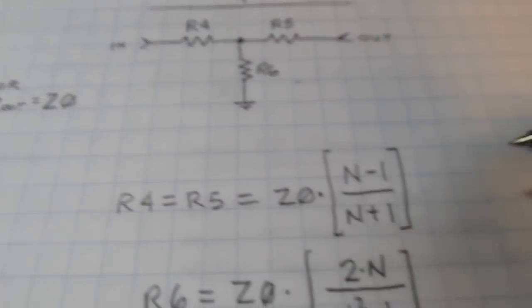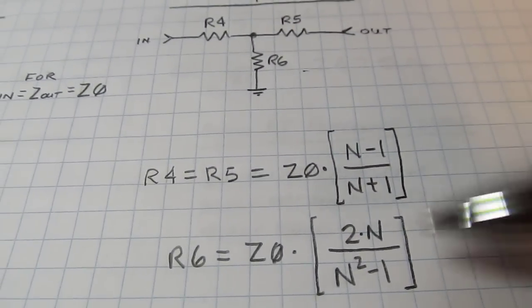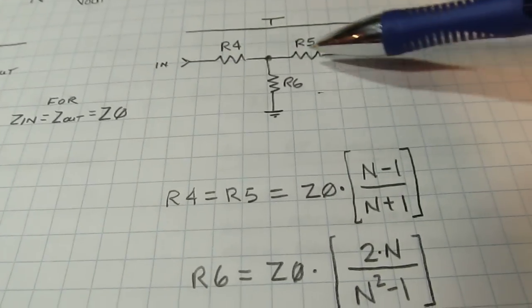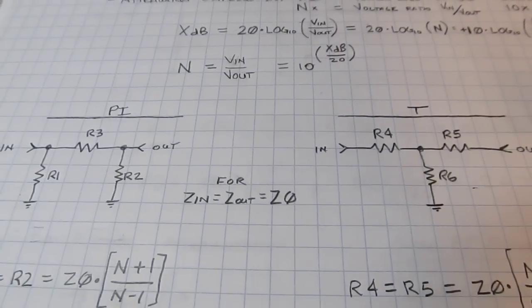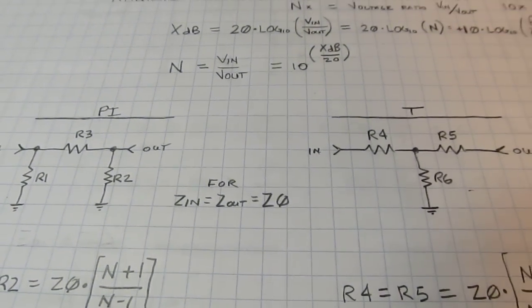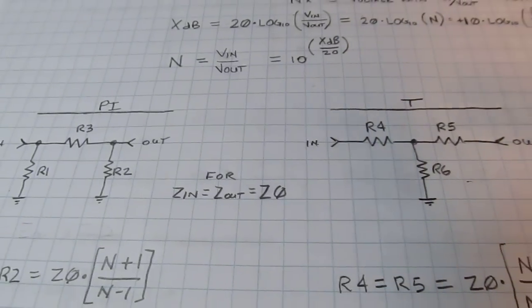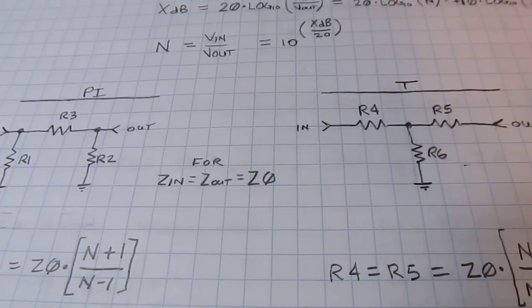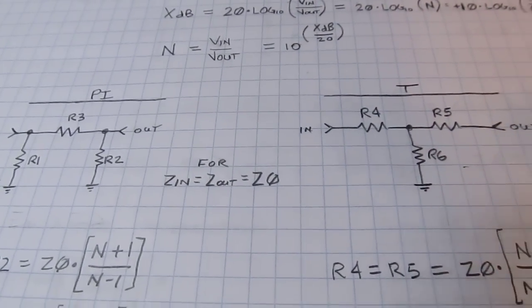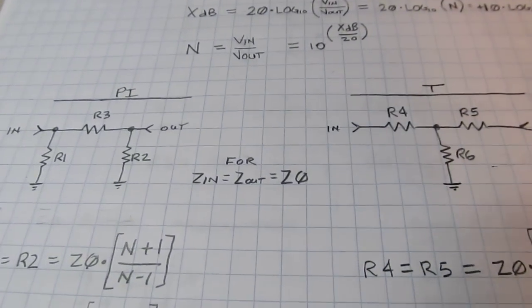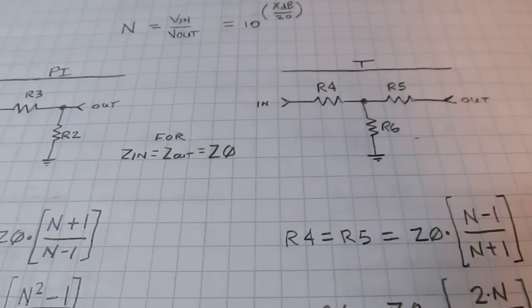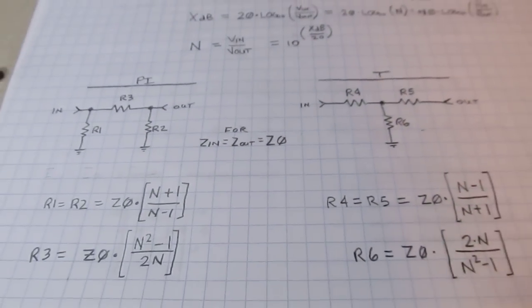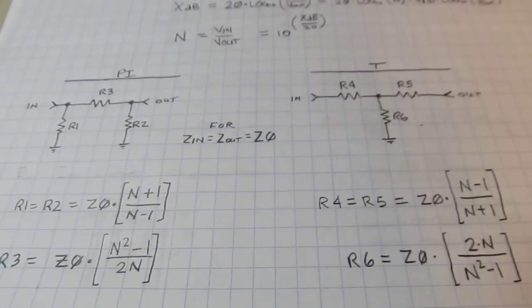Pretty simple equations to calculate out the values for the pi attenuator. Similarly, there are equal, kind of similar equations for calculating out the three values for the T attenuator. Now the choice of which one to use is really kind of your preference. If you're just building this thing discretely, there's really no difference in performance or anything else between the two. It might be more convenient in terms of which resistors you have on hand to design one or the other. If you were designing a thick film or thin film RF circuit, then you might choose one or the other based on the resistor inks you've got available.